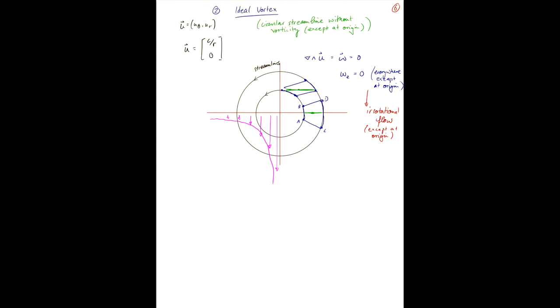If we look at the circulation for this case, u dot ds, we find, so we'll go from 0 to 2 pi, for any radius r, u is c over r times r d theta, which is just 2 pi c. So it's a constant.